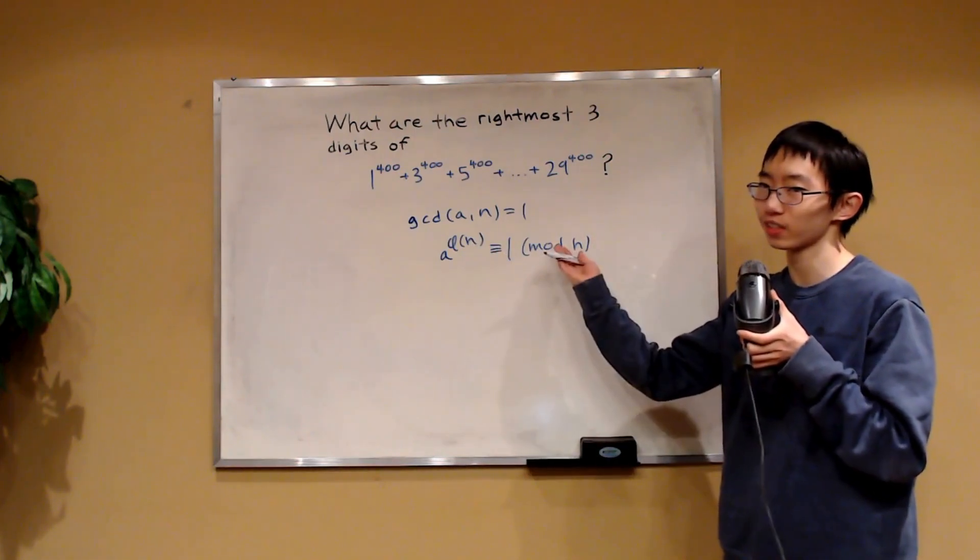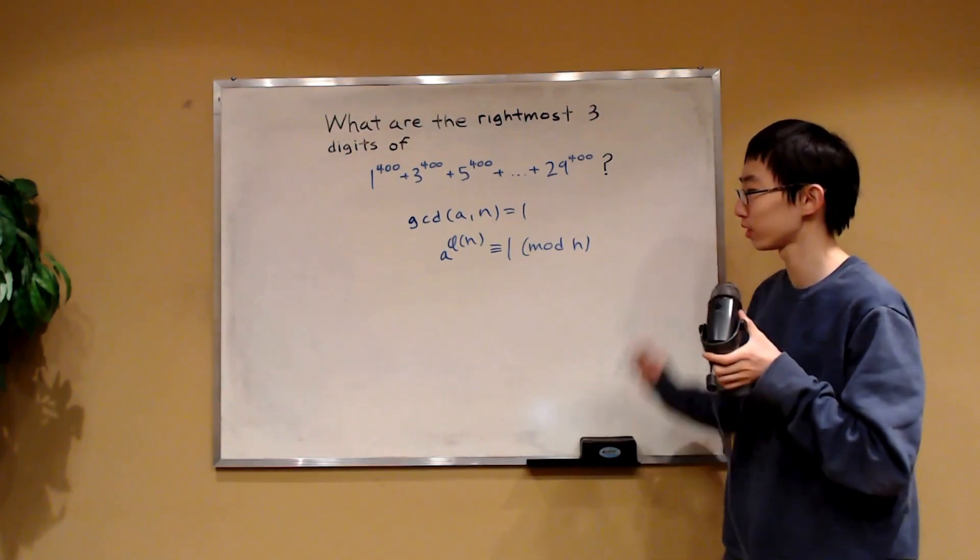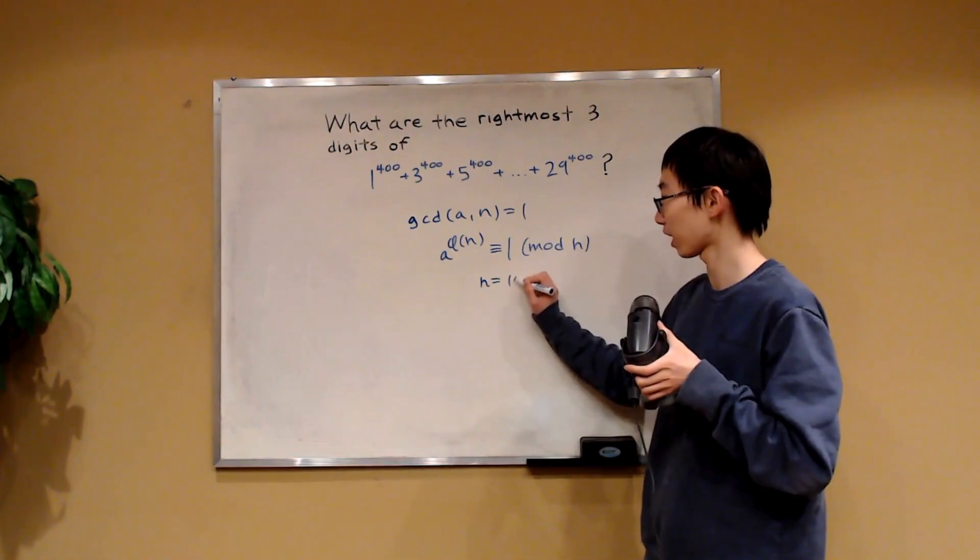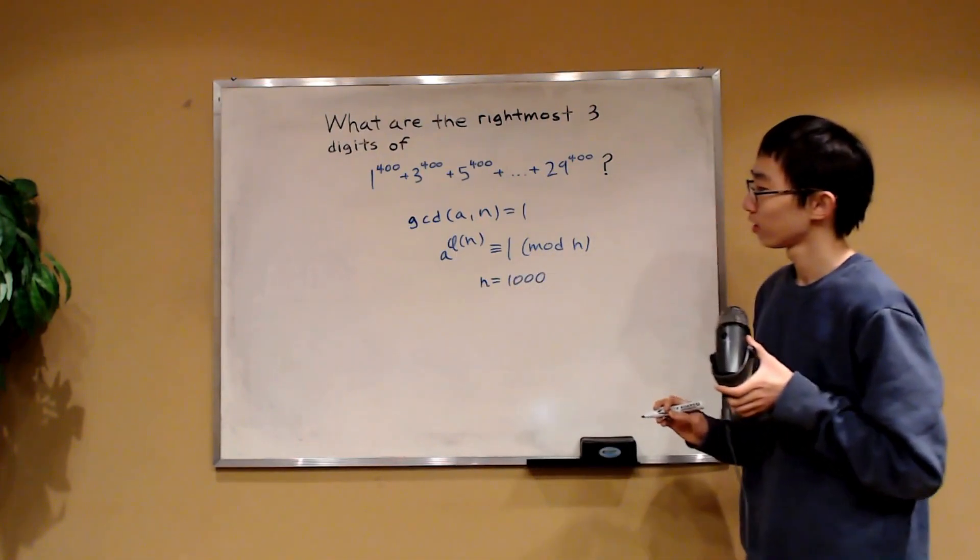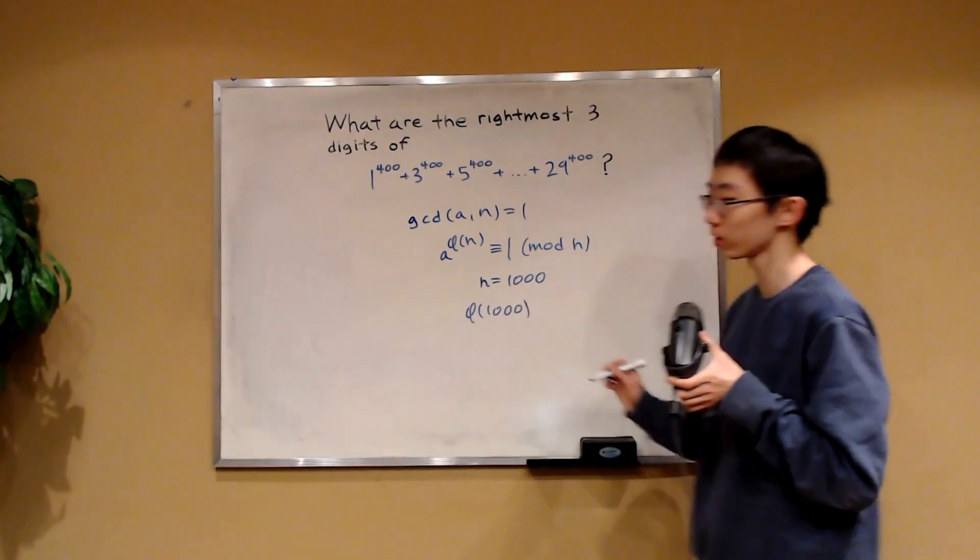Where phi of n is basically the number of positive integers less than n which are relatively prime to n. So this is Euler's theorem. Now, something cool happens when we take n to be 1,000. If we were to compute phi of 1,000, what would it be?